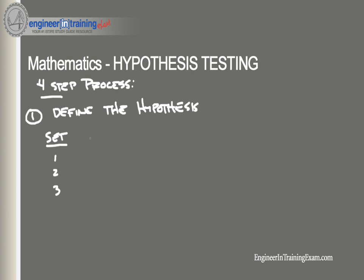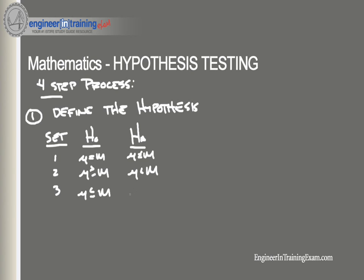Here are three sets of hypotheses that can be defined in this first step. For the null hypothesis, we can say that a mean is equal to some number; in that case, the alternative hypothesis would be that the mean is not equal to some number. The second set: the null is that a mean is greater than or equal to some number, and the alternative is that the mean is less than that number. Finally, we can test that the mean is less than or equal to some number, and the alternative hypothesis would be that the mean is greater than that number.